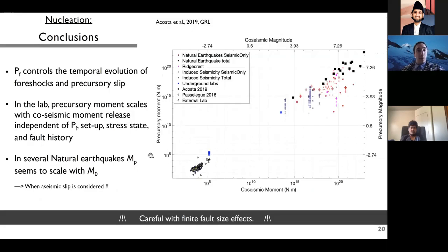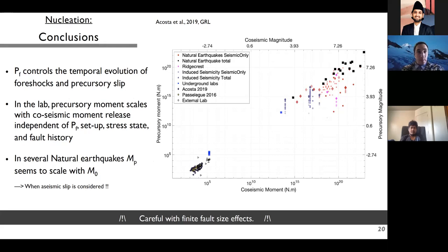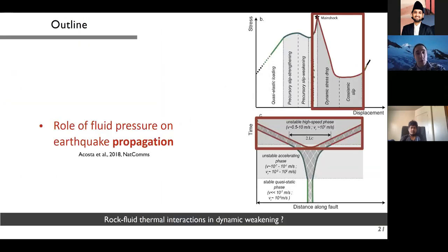Conclusions on the nucleation phase: very slight changes in pore fluid pressure drastically change the temporal evolution of foreshocks and precursory slip on laboratory faults. Nevertheless, in the laboratory the precursory moment scales with the co-seismic moment release independently of experimental conditions, and this seems to hold for several natural earthquakes as long as aseismic slip is included in the precursory moment released.